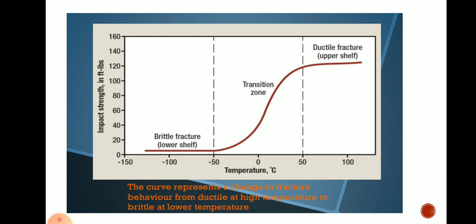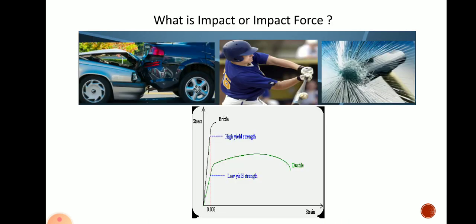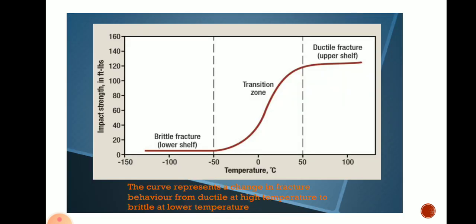Under impact load, material behaves differently under different conditions such as temperature. Under certain temperature conditions, a ductile metal can behave like a brittle material. In the stress-strain diagram you can observe that a ductile material can sustain a load with a certain amount of strain, but the brittle material will break after a certain stress.